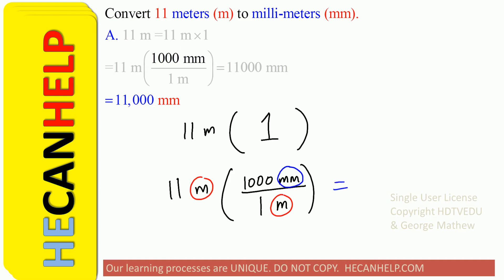Millimeters. So this is nothing but 11 times 1,000, and that is 11,000. So 11,000 millimeters is 11 meters.